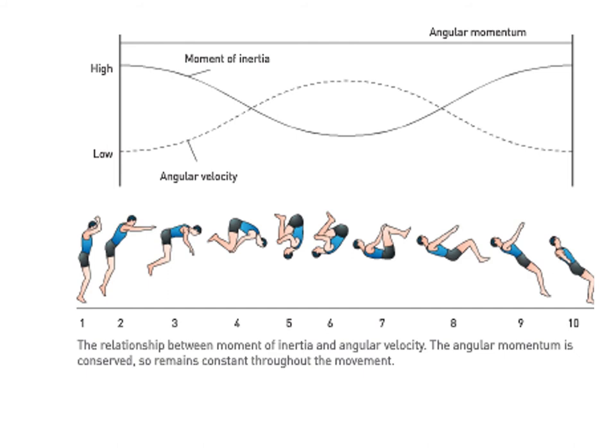This diagram shows that angular momentum is constant from when the gymnast leaves the ground until they land. Because they go into a tight tuck position and then open back out, there is an interplay between angular velocity and moment of inertia. As the gymnast tucks into a ball, moment of inertia decreases — making it easy to rotate — and angular velocity increases. At position 6, in the tight tuck, we have very high angular velocity and very low moment of inertia. Angular momentum does not change once you are airborne.